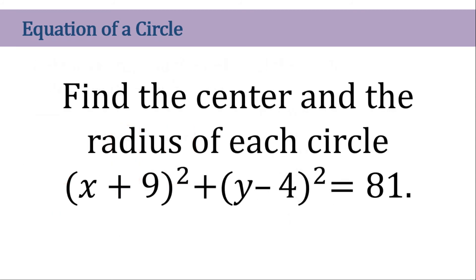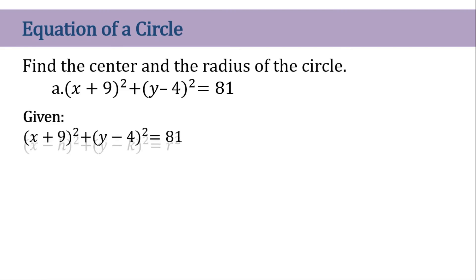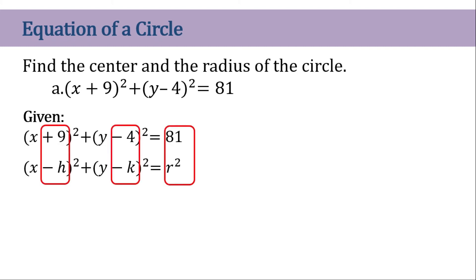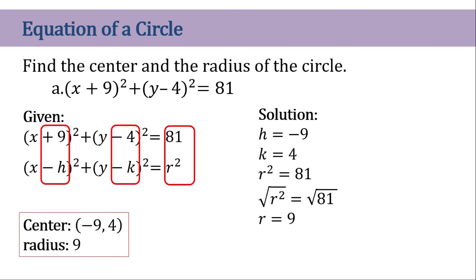Now let's find the center and the radius of another circle. We compare the given equation to the standard formula and get the value of h, which is negative 9, and the value of k, which is 4. And r squared is 81. Taking the square root, we have the center at (-9, 4) and radius of 9.